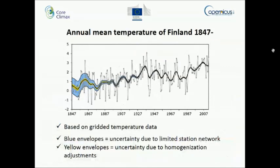This is the time series that we are now talking about. It's the annual mean temperature of Finland — the longest that we can have, starting from the mid-18th to 19th century. In this figure you can see the annual values and then the smooth heat curve, and these envelopes around the smooth heat curve represent uncertainties due to different issues.